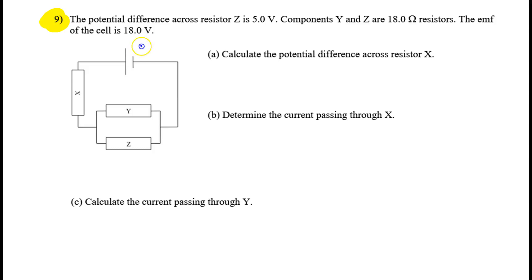Here's a circuit where the EMF is 18 volts. Z has 5 volts, that's its potential difference, and the resistance here is 18 ohms, same down here.